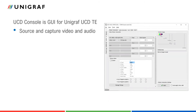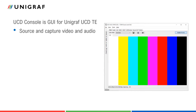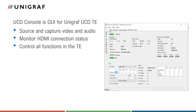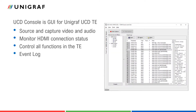UCD console is the graphical user interface for all Unigraf UCD family test equipment. UCD console includes a pattern generator function to source video and audio, while providing a capture function to monitor and store received content. With UCD console, the user can monitor the status of the HDMI interface and the connected HDMI receiver device. UCD console has dedicated dialogs for controlling all functions of the UCD422 test equipment. The event log feature enables the monitoring of received metadata packets like infoframes.